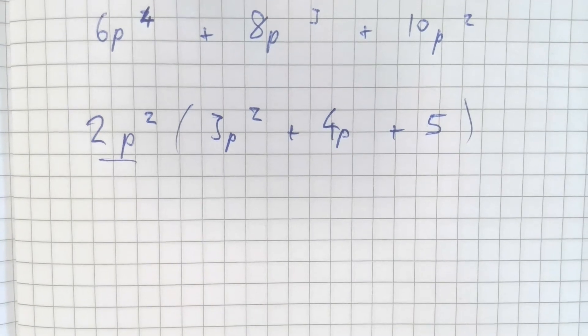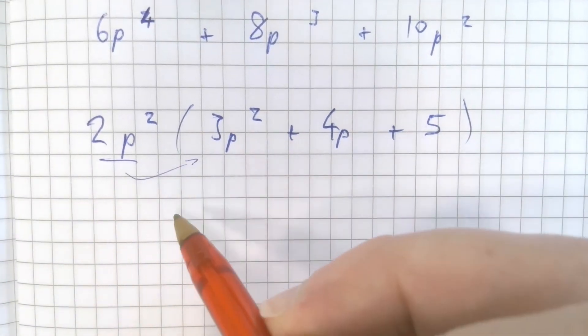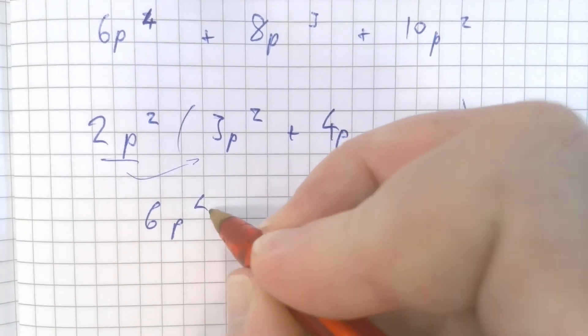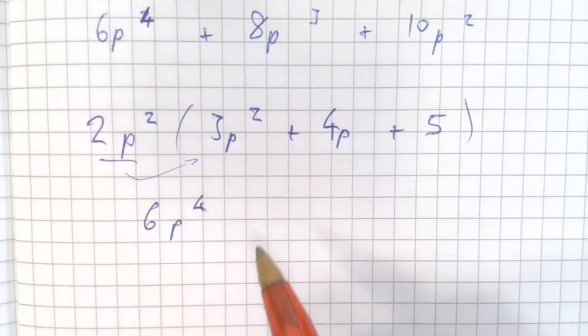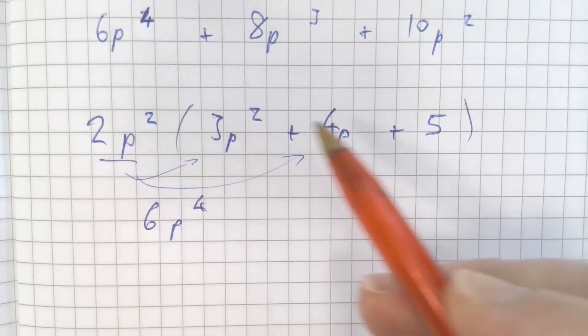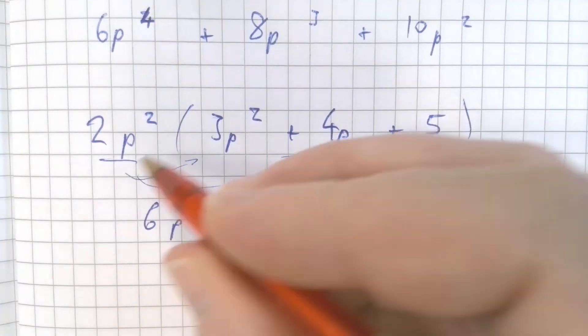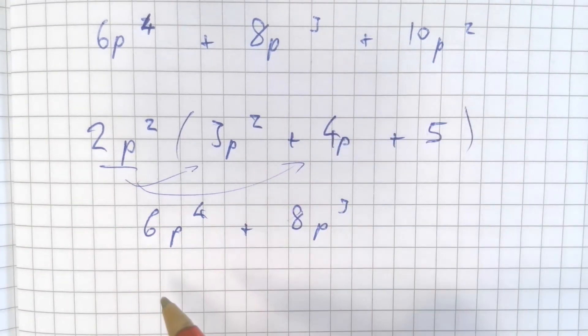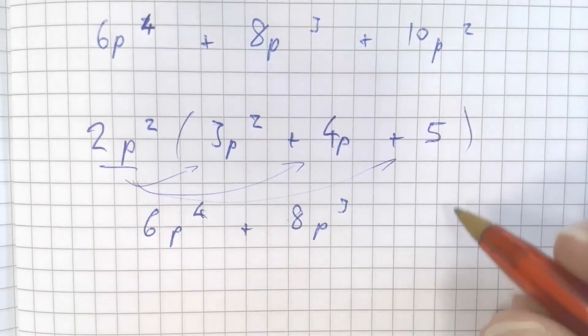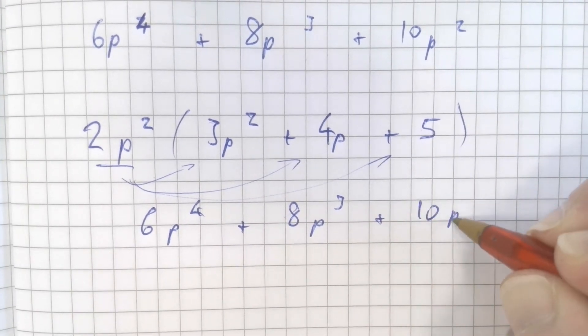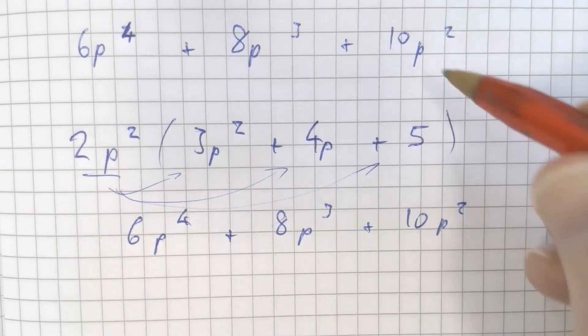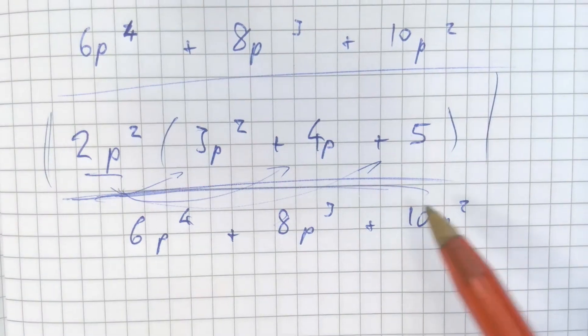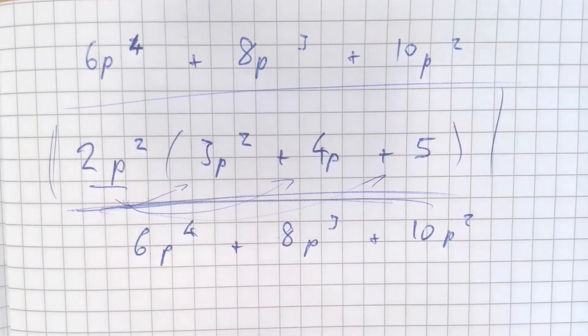We can check this by expanding this out. 2p squared times 3p squared: 2 times 3 is 6, p squared times p squared makes p to the power of 4, which matches that first term. 2p squared times 4p: 2 times 4 is 8, p squared times p makes p cubed, which matches that second term. And then 2p squared times 5 makes 10p squared, which again matches the last term. So we know that this is the correct factorization of that expression.